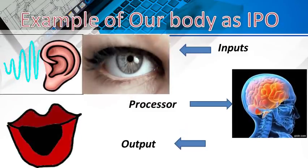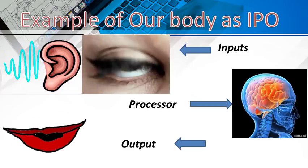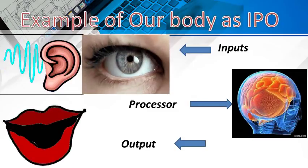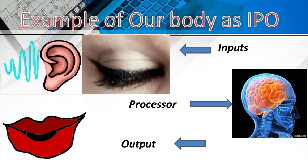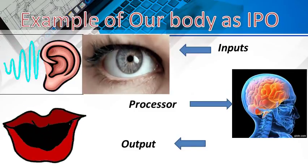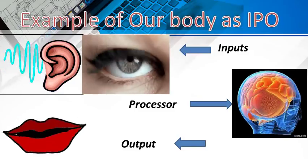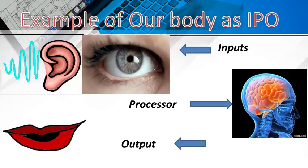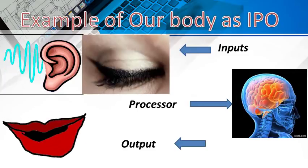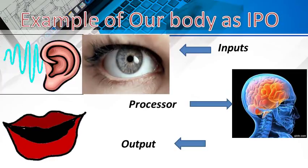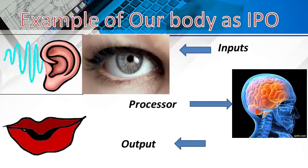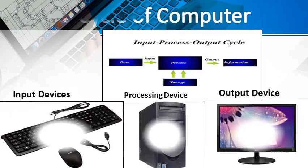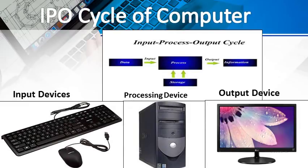Did you understand the process of input, processing and output now, children? Everything in our real life works on the IPO cycle. Let us take the example of our body. When a teacher asks us a question, we hear it with our ears and see with our eyes. The ears and eyes are the input units. Our brain stores everything that a teacher says, then it thinks of an answer and orders us to speak. In this way, the brain works like a processing unit. When we answer with our mouth, it works like an output unit.